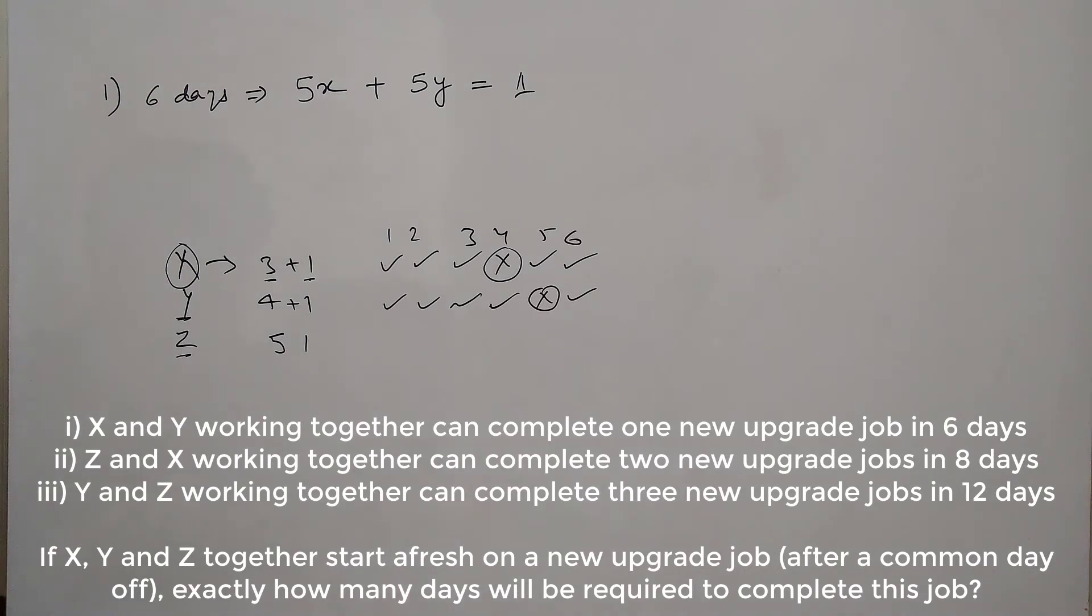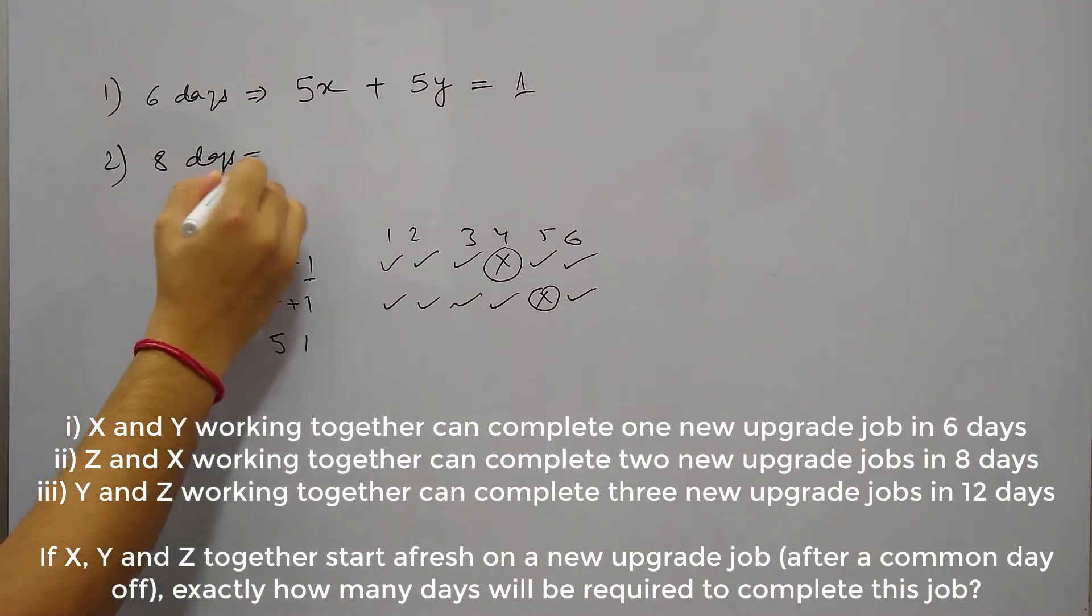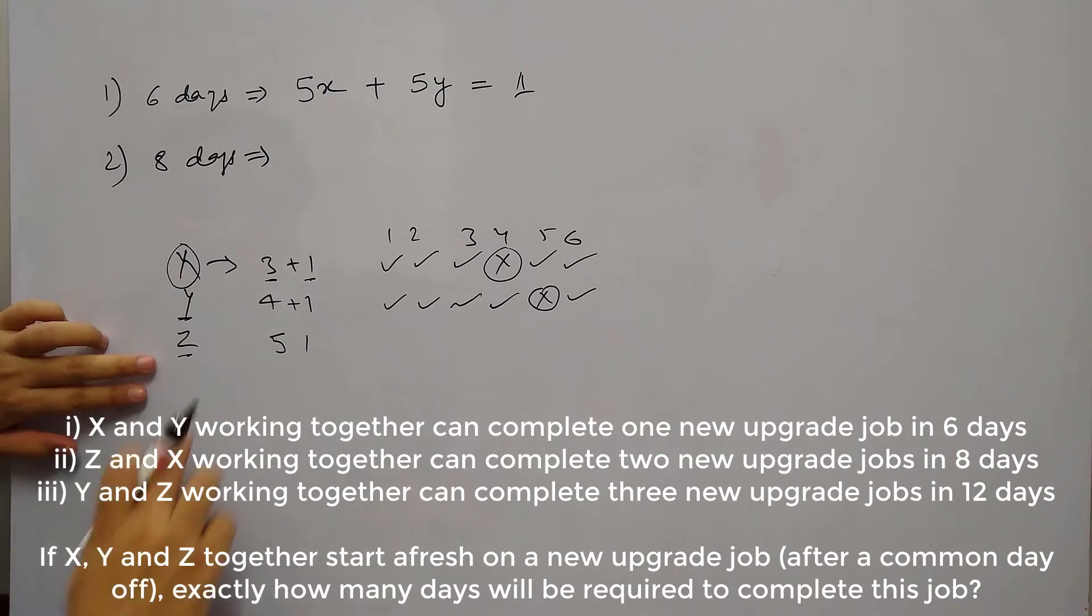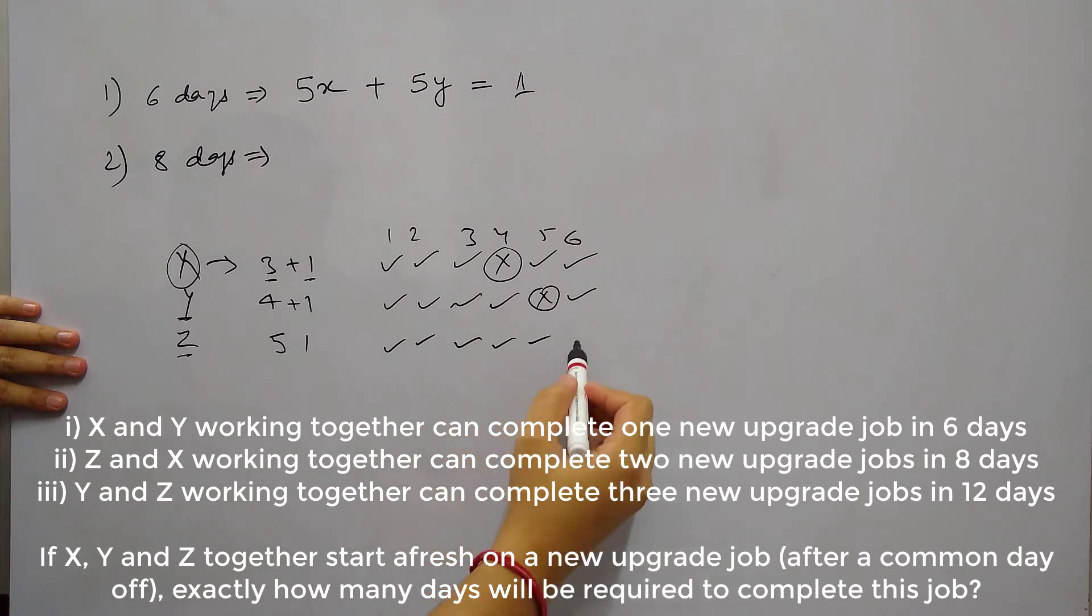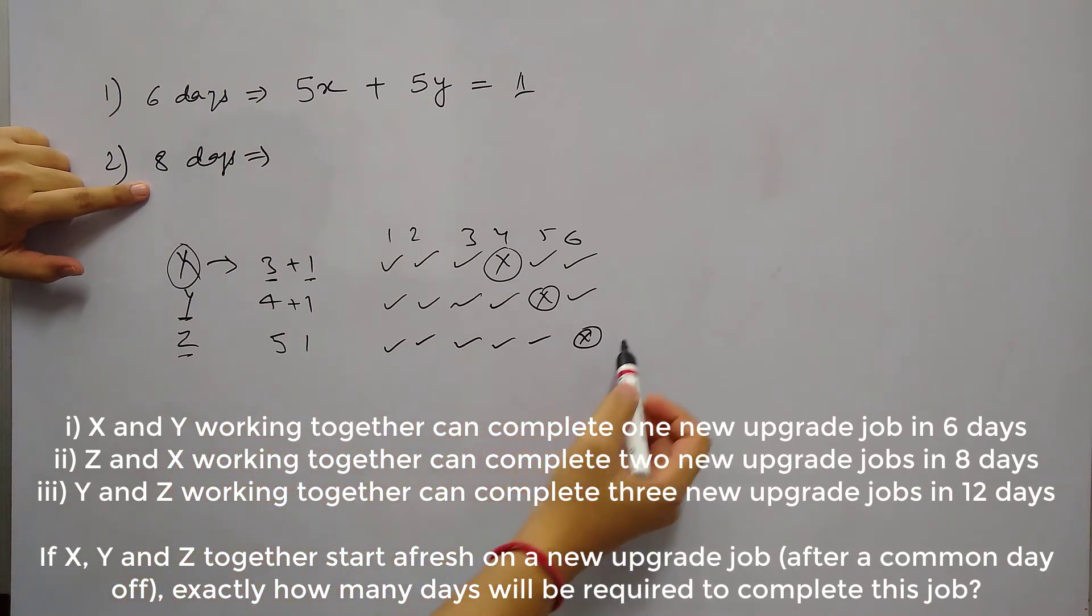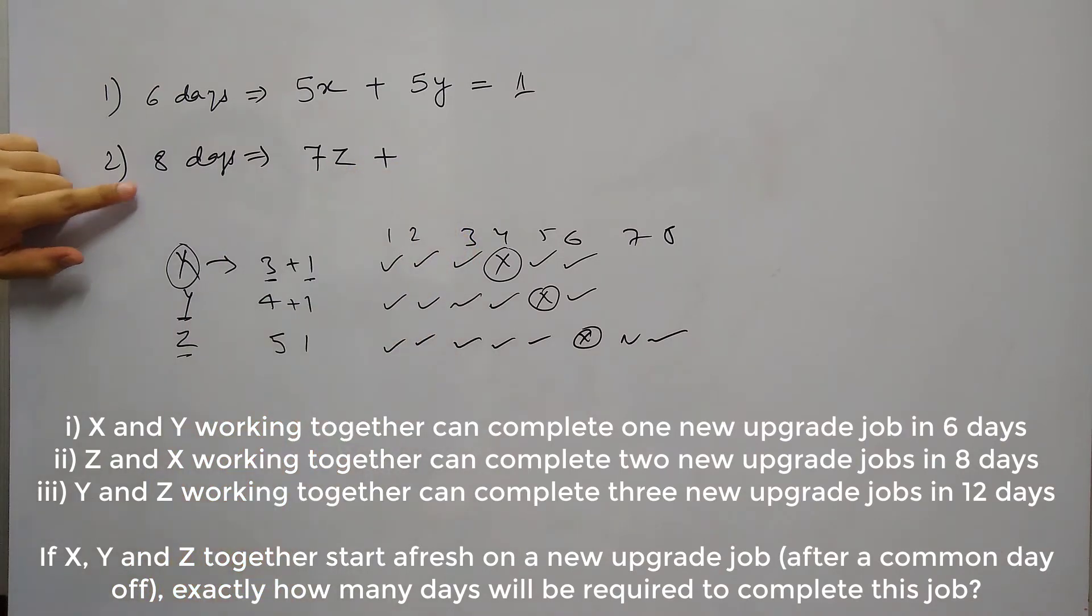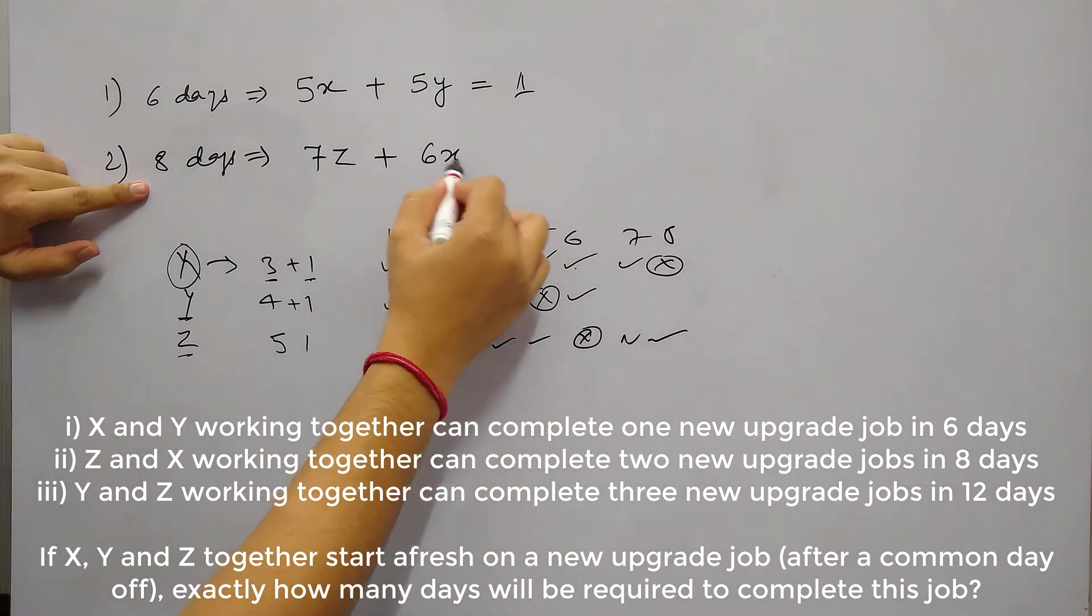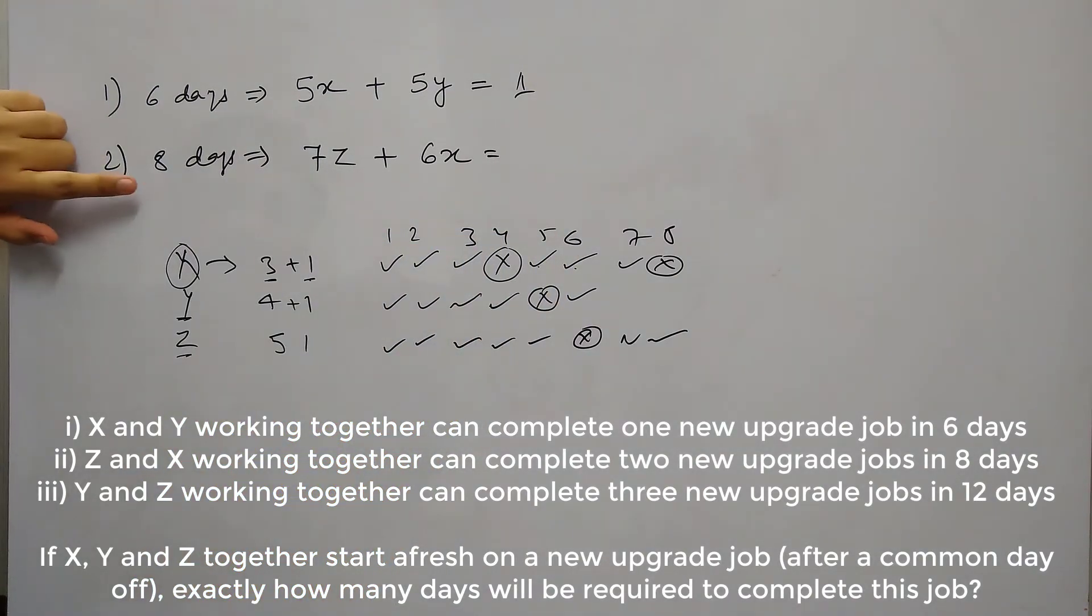Now statement 2 says Z and X working together can complete 2 new upgrade jobs in 8 days. So we have statement 2 which says the work was done for 8 days. And in this 8 days Z and X are working. So Z's working pattern is 1, 2, 3, 4, 5 and 6th day will be leave for Z. So out of 8 days Z will work for 5 and then 7 and 8. So Z will work for 7 days. So 7Z plus in these 8 days X will work for 3, 4, 5, 6 and 7th day will be off. So again X will work for 6 days. So we can write 7Z plus 6X.